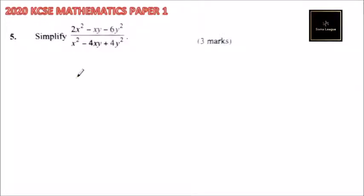This is question number 5. You are told to simplify 2x squared minus xy minus 6y squared, all divided by x squared minus 4xy plus 4y squared, and you get 3 marks.